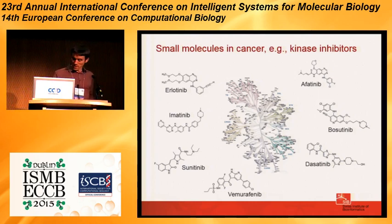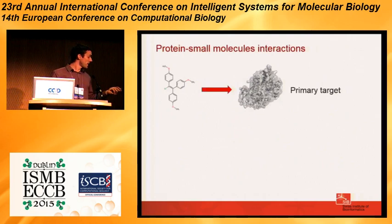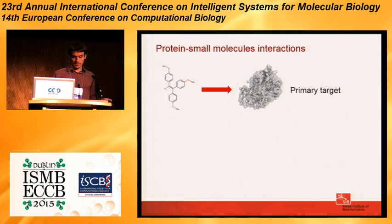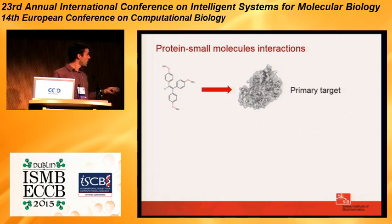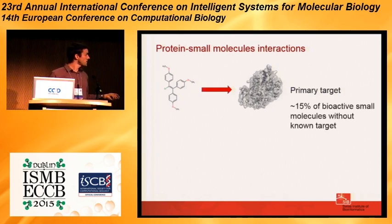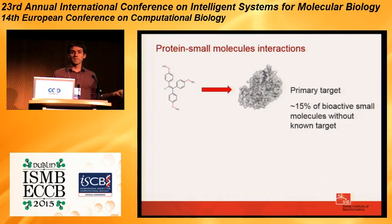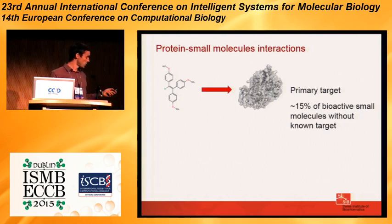The way it works is that people identify a primary target they are interested in — they think if we inhibit this it may be useful — and they develop different small molecules that bind to these targets. Despite all this medicinal chemistry work, there is still a substantial fraction of molecules for which we know they have some bioactivity but we have no idea about the targets. Many of these molecules have been tested in phenotypic assays, where you test not for a target but just screen a population of cells — in yeast, cell lines, or whatever — and find that there is some effect.